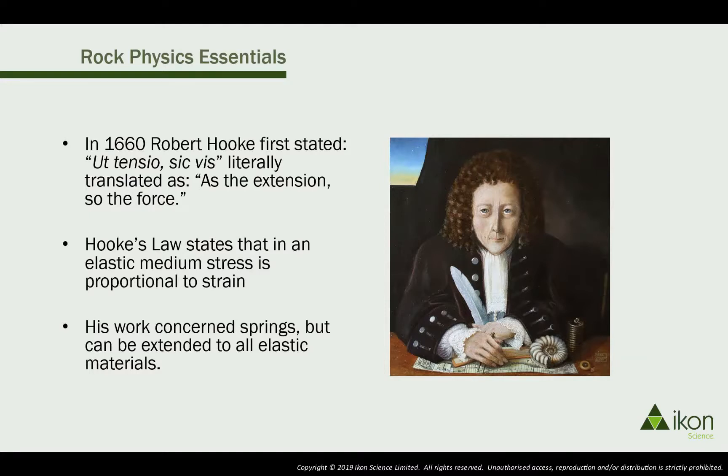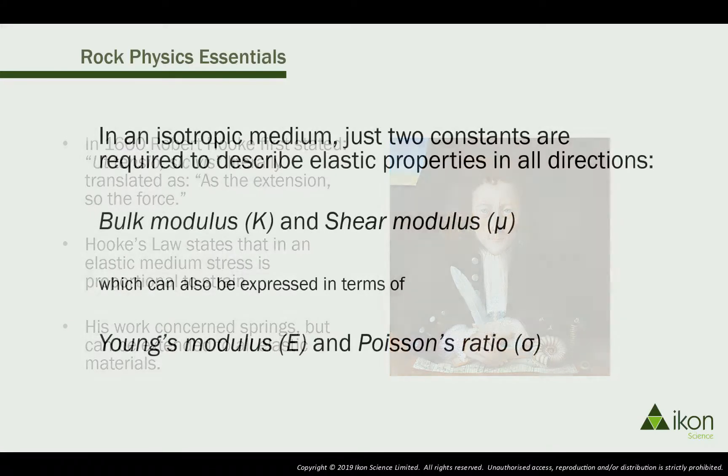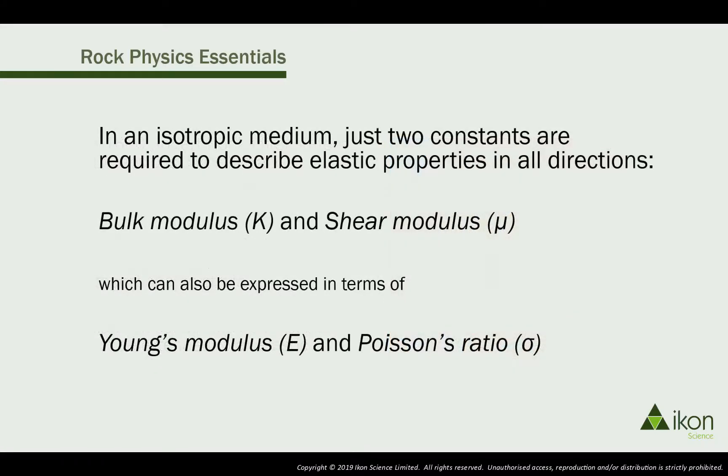If we apply a stress to a rock, it will deform in a predictable way within its elastic limits. In the isotropic case, the rock's elastic properties can be completely described by just two moduli, for example bulk modulus and shear modulus.